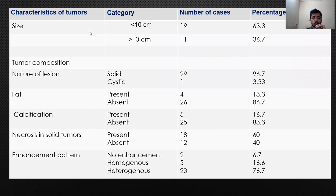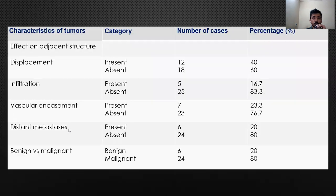Coming to characteristics of the tumour: size, tumour composition — whether the lesion is solid or cystic — presence or absence of fat, calcification, necrosis in solid tumours, enhancement pattern, effect on adjacent structures in the form of displacement, infiltration, vascular encasement, distant metastasis, and benign versus malignant classification. In my study, 24 cases were malignant.